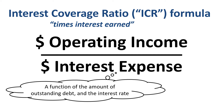If the interest coverage ratio is 10, then for every dollar of interest expense, there is $10 of operating income to cover it. If the interest coverage ratio is 2, then for every dollar of interest expense, there is only $2 of operating income to cover it, and you are much more fragile to either a decrease in operating income or an increase in interest expense. We will see how this works in upcoming examples.